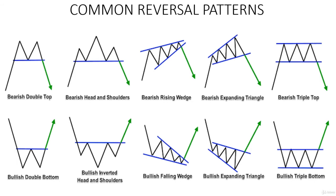In this section of the course we'll be covering the common reversal patterns for trading. The first is the double top. When you notice the market was in an uptrend, it came back to support, went back up, then came back to the same support. Once it reaches the same support it can go up or down, but if you notice it goes down, you want to trade down along with the direction of its movement.